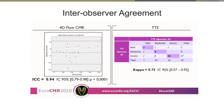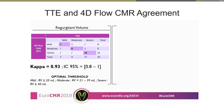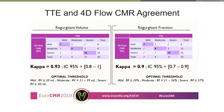We selected optimal thresholds in terms of volume — 20 and 40 milliliters — to achieve very good agreement between 4D flow and TTE for mitral regurgitation. Considering regurgitation fraction, the optimal thresholds were 20% and 37%, which is very close to the values found for aortic regurgitation.